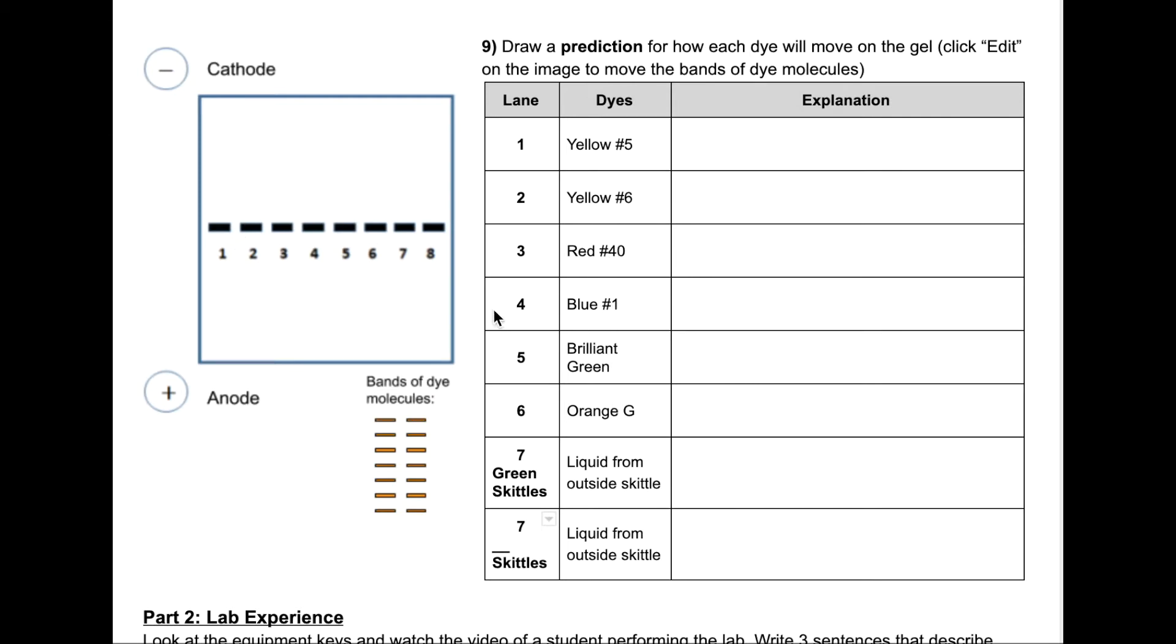In lane number 7, we're going to add the liquid that we got from the outside of the green Skittle. In a separate gel, you'll see results for the different colored Skittles. So if you chose the pink Skittle to make a prediction, you'll see results in lane 7 on a separate gel.